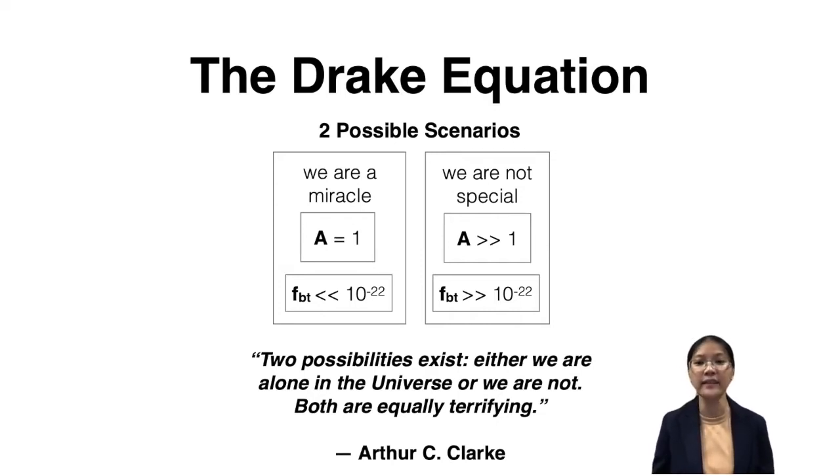On the other hand, there's also the scenario where we are not so special. These probabilities are actually not that small. And in that scenario you actually get A much, much greater than one. So that means that the universe, the galaxy, even our own galactic neighborhood, could be filled with life and with civilizations just like ours.